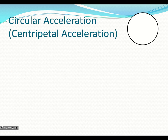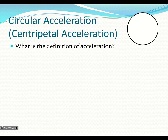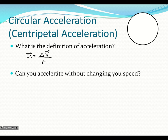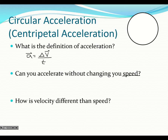Another thing we need to talk about is circular acceleration, or what we call centripetal acceleration. So what's the definition of acceleration? Acceleration is how fast we change our velocity — it's our change in velocity in a certain amount of time. Remember that acceleration is a vector, and that's important. So can you accelerate without changing your speed? Lots of people would think no. But what about if we talk about velocity? How is velocity different than speed? Velocity is a vector and speed is scalar — velocity has a direction and speed does not.